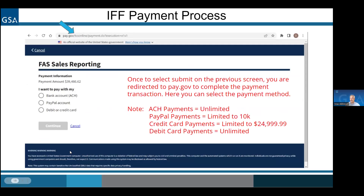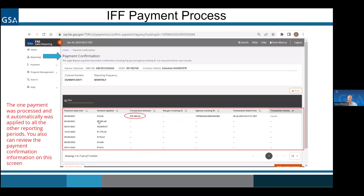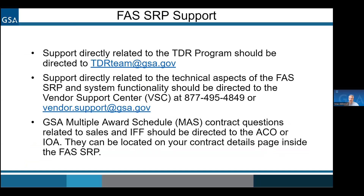At pay.gov, you can pay with three methods: ACH, PayPal, or debit and credit. ACH and debit cards have no limits; the other two do have limits. You select your method of payment and then go ahead and process it, and SRP will give you a payment confirmation. The last screen shows the folks you can contact in case you need help. The vendor support center phone number and email address are here — they're awesome and they love to help you. If you need any help, you can reach them and they will guide you through any processes you have to complete.